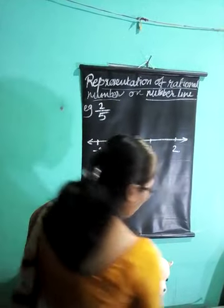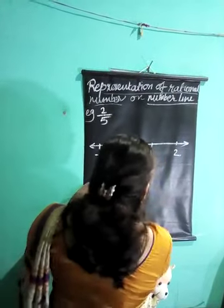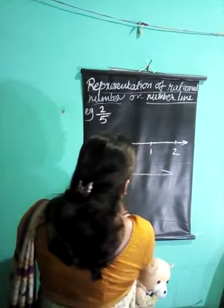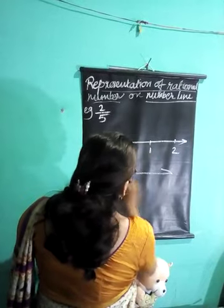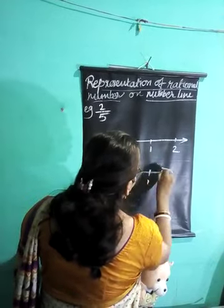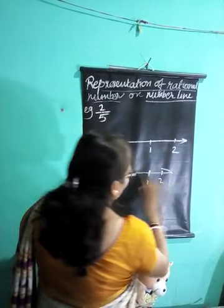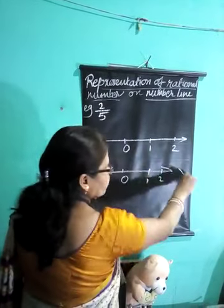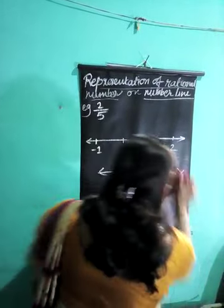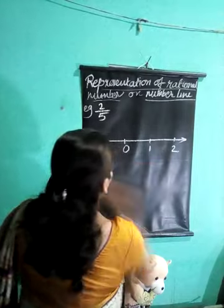You cannot have unequal spacing like this — here 0, here 1, here 2 with unequal gaps. You should not have that; this is wrong. You should have equal spaces between 1 and 2.